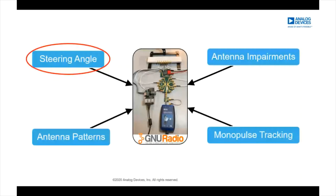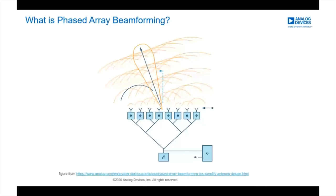The signals at the elements are combined in such a way that signals at a particular angle are constructively summed, while other angles experience destructive interference. It's the phase shift of each element that optimizes this combination. Here I show four elements from a patch antenna configured to receive an incoming signal. Our goal is to match the delays from each element such that they combine in sync to form the largest possible combined amplitude.